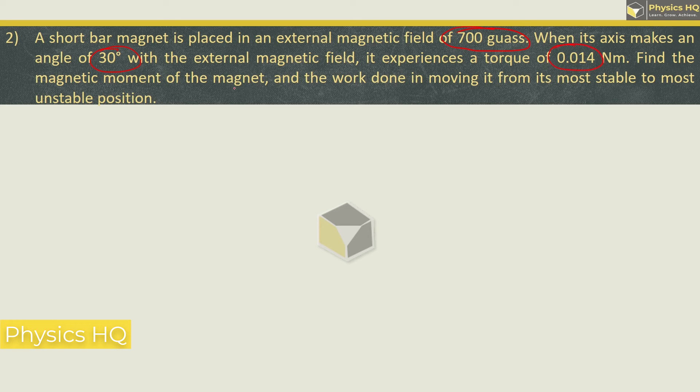Find the magnetic moment of the magnet and the work done in moving it from the most stable to the most unstable position. First of all, we have external magnetic field of 700 Gauss. But the standard unit is Tesla. Remember this: 1 Gauss is 10 raise to minus 4 tesla.